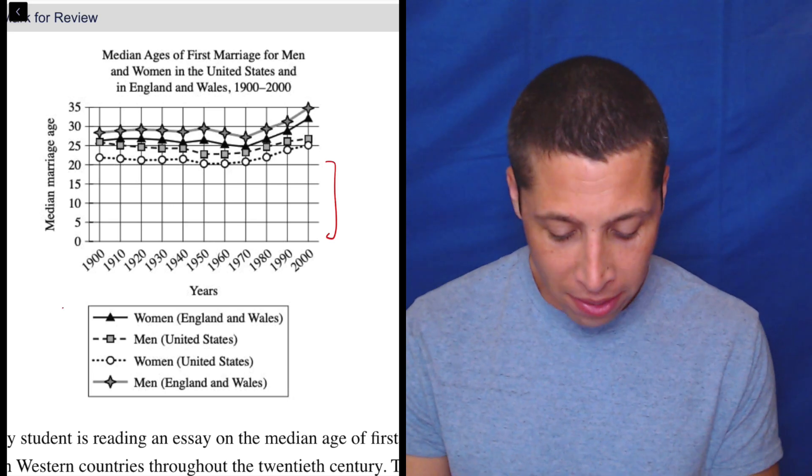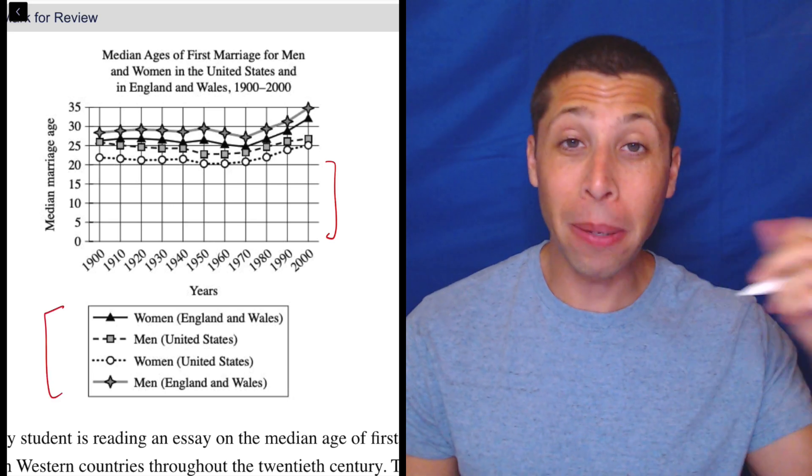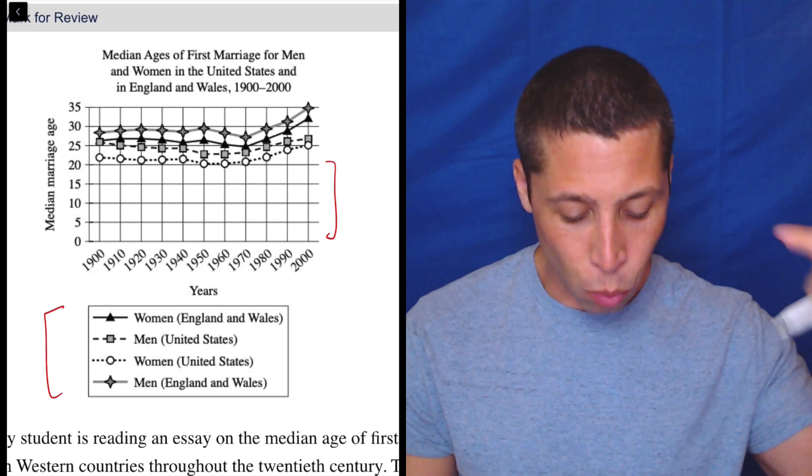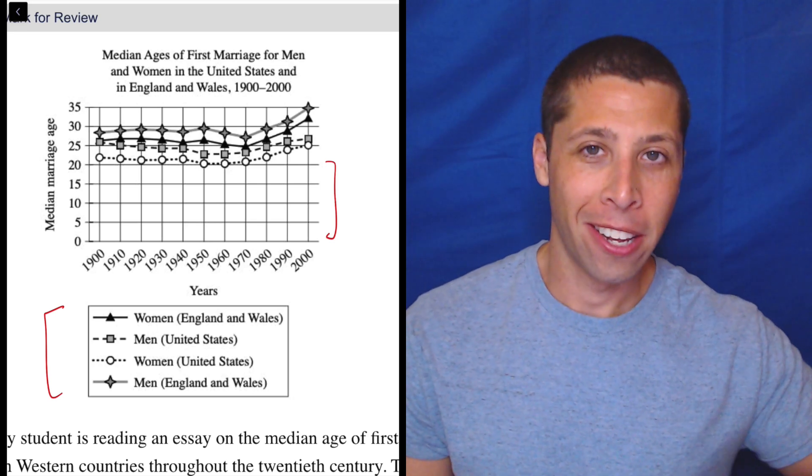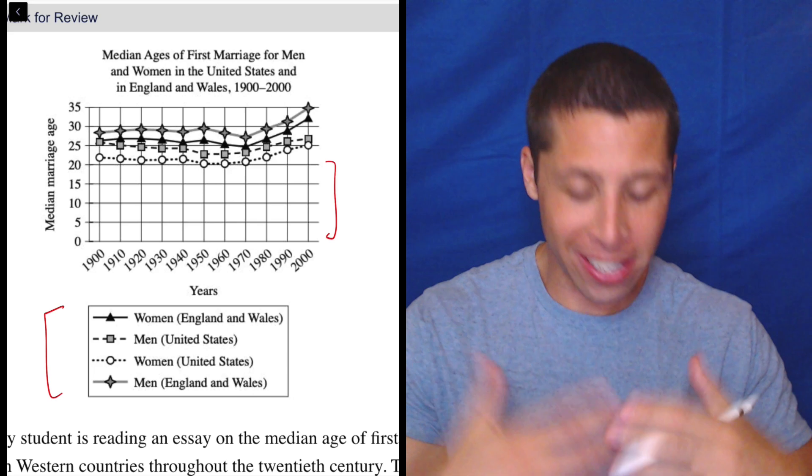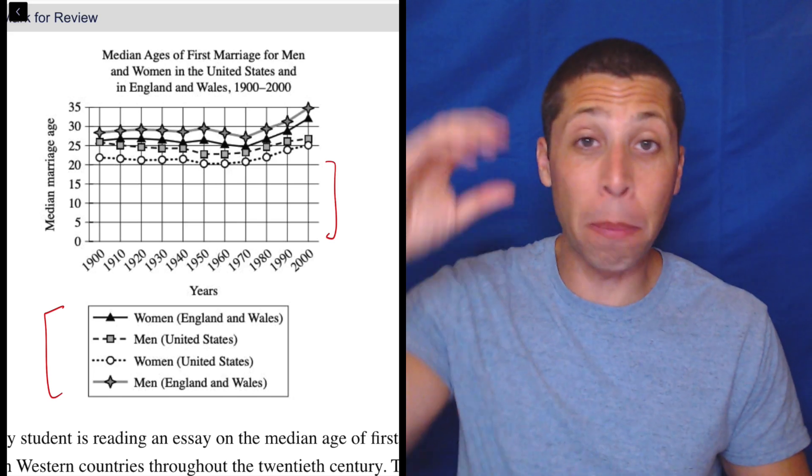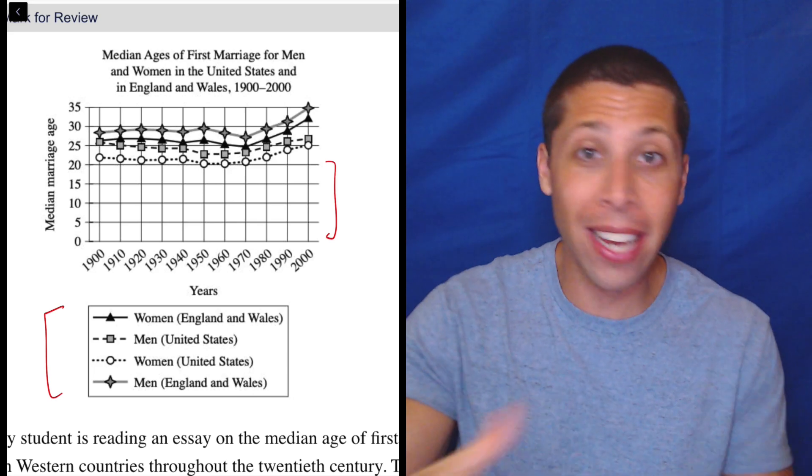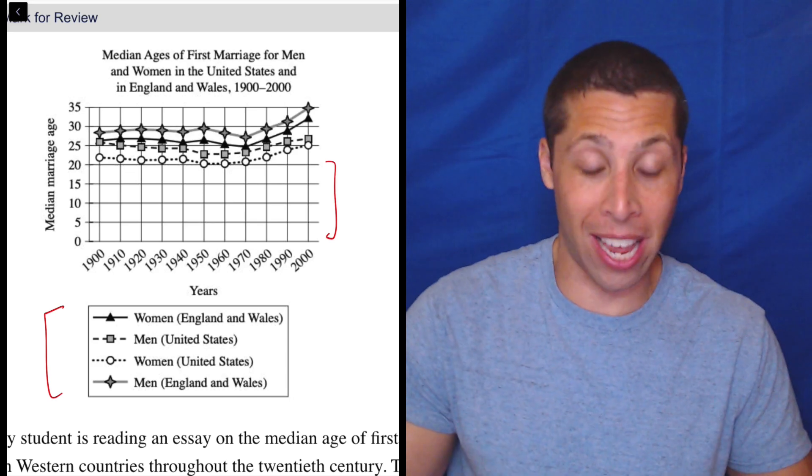Even worse, the legend over here is completely nonsensical. We have women in England, men in U.S., women in U.S., men in England. There is no pattern to that. There's no reason to put them in that order. Either put both the Englands together or both the U.S.'s together or both the men together, put the women together. Nope, they did neither of those things and spread them out.